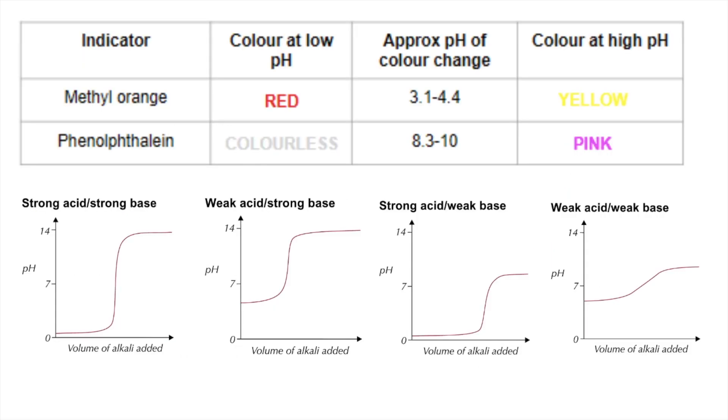A couple of examples of indicators. You don't have to know any specific indicators, but I always use methyl orange and phenolphthalein. Methyl orange is red at low pH in acid conditions, yellow at higher pH. The range of the indicator is 3.1 to 4.4. Below here it's red, above here it's yellow, so it's orange in the middle.